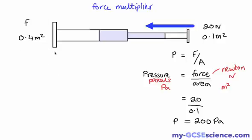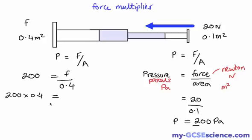Now how does that help us work out the force over this side? It's a very simple case of using the same formula but with a different set of numbers. We now know that the pressure is 200 pascals in the system. So we can say 200 equals the force, which we don't know on this side yet, divided by the area which is 0.4. If we rearrange the formula, 200 times 0.4 will give us the value of the force.